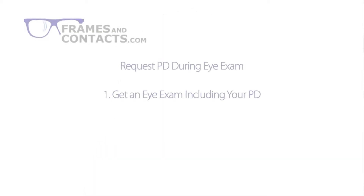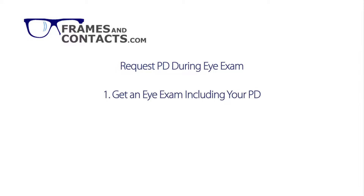I will now explain six different methods of getting your PD. Number one, the simplest method is to go to your eye doctor or optometrist for an eye exam. Ask your eye doctor, optometrist, or optician for your PD measurement along with your new prescription.